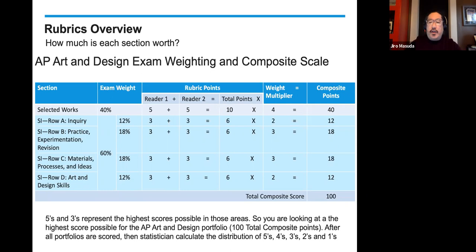The total composite score would be 100. Fives and threes represent the highest scores possible in those areas. So what you're looking at in this example is the highest possible score for the AP Art and Design portfolio — 100 total composite points. Once all the portfolios are scored, statisticians calculate the distribution of fives, fours, threes, twos, and ones.